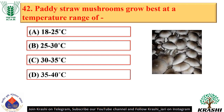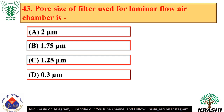Question number 42. Paddy straw mushrooms grow best at a temperature range of 30 to 35 degrees Celsius — option C.